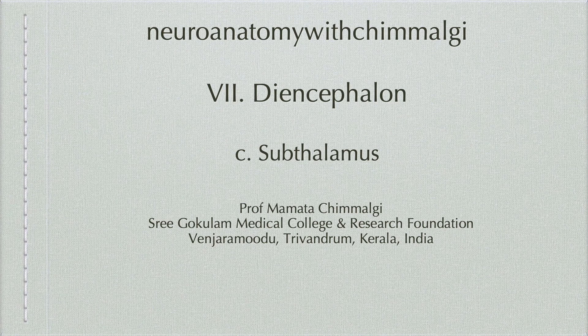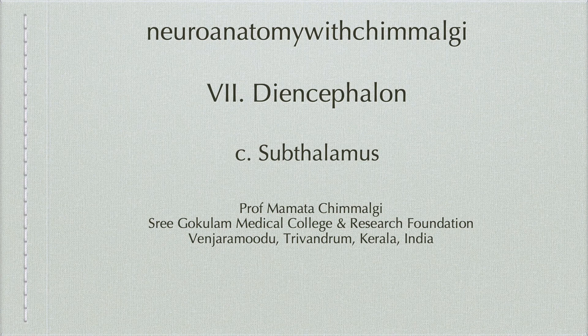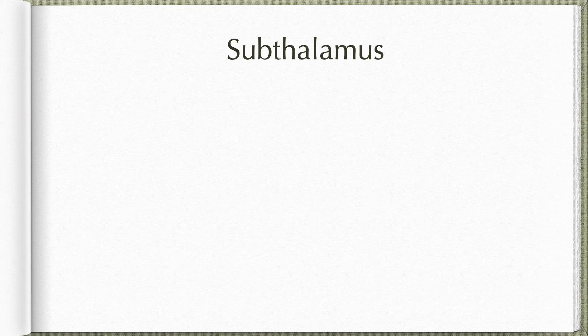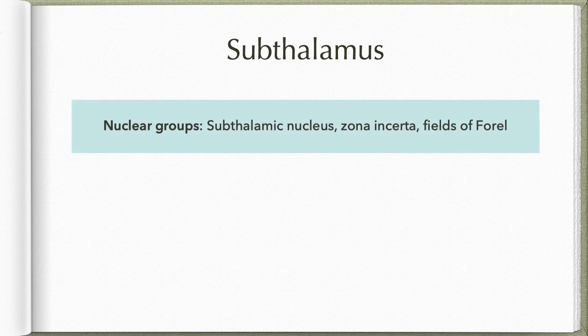In this video let us learn about subthalamus. Subthalamus is a part of the pars ventralis portion of the diencephalon. As the name suggests, it is located below the thalamus. It is a complex region made up of both gray matter and white matter. Gray matter includes nuclear groups like the subthalamic nucleus, zona inserta, and some of the neuronal groups within the fields of Forel.